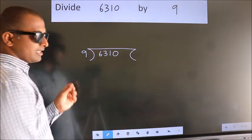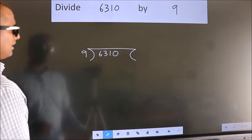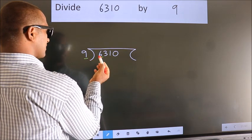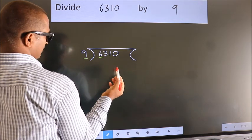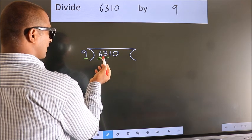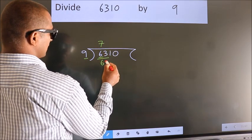This is your step 1. Next. Here we have 6. Here 9. 6 is smaller than 9, so we should take 2 numbers: 63. When do we get 63? In the 9 table. 9 times 7 is 63.